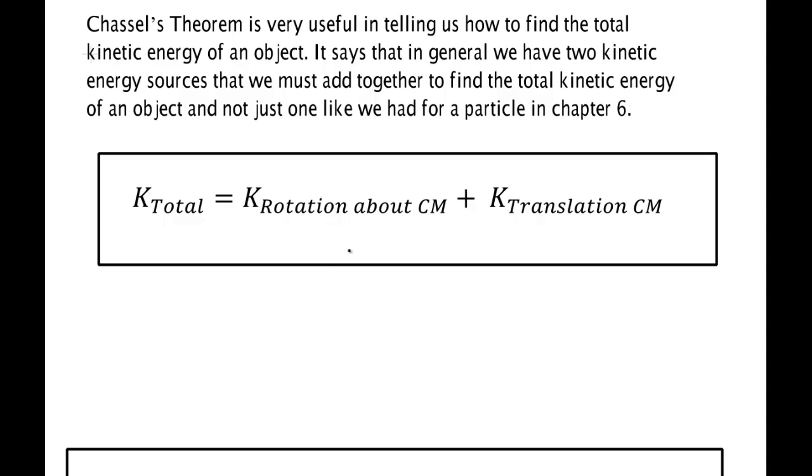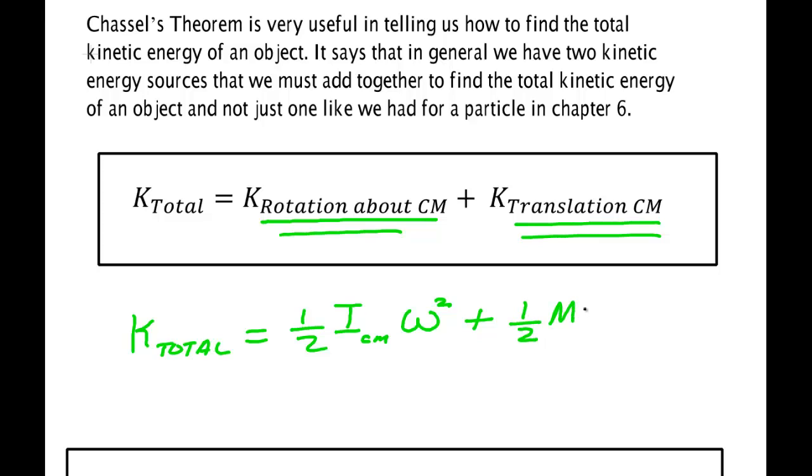So if you write that down, this is Chassel's theorem in terms of energy, total energy of motion, the energy due to rotation about the center of mass, the energy of the translation of center of mass. So K total is equal to one half rotation energy. That's the moment of inertia about which axis? The center of mass. So you got to use the I for the center of mass times the angular speed squared plus one half times the mass times the speed of the center of mass squared.